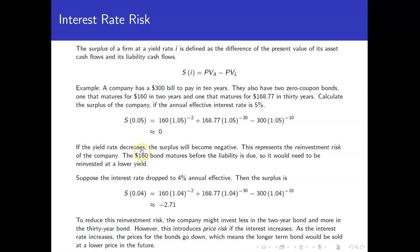Now, if the yield rate decreases, the surplus is going to become negative. To see why, when you take this $160 bond, you're going to have to reinvest that to help pay the $300 bill in 10 years, if you're going to use that particular bond to do so. At a lower yield rate means it's not going to grow as much, which is going to mean it's going to be a little bit short when we start trying to help pay off this $300 bill.